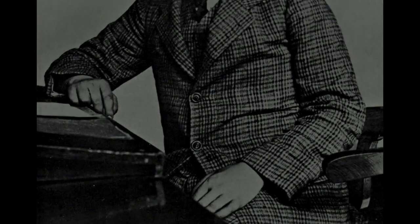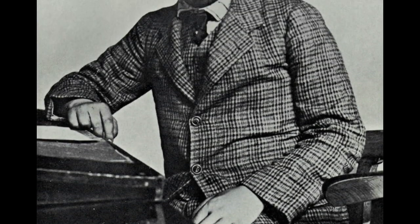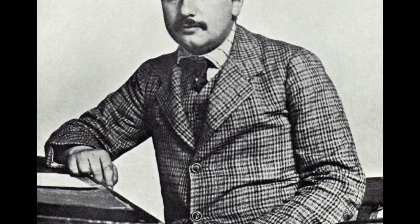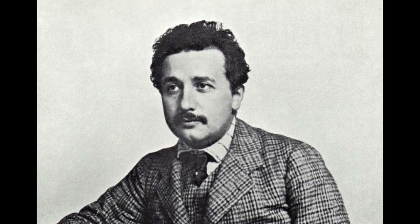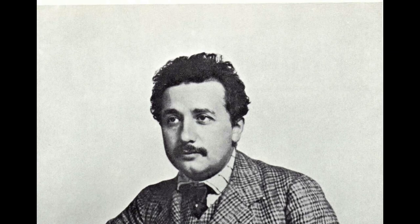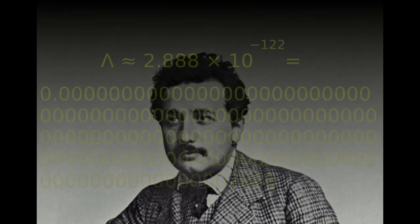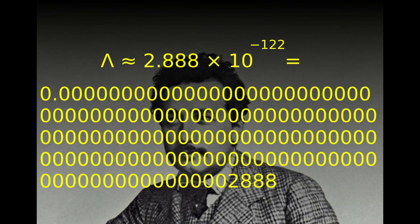The cosmological constant, and Einstein's greatest blunder. The strength of the force that drives the expansion of the universe is determined by a number called the cosmological constant, lambda. Lambda is approximately 2.888 times 10 to the power of minus 122. Lambda is incredibly small — it has 120 zeros after the decimal point, and then a 2.